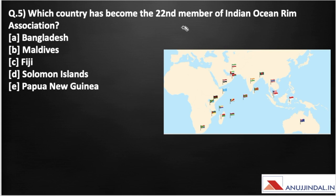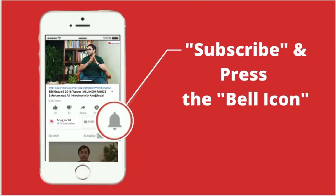The headquarters of Indian Ocean Rim Association is in Ebene City, Mauritius. My question for you is: who is the present Secretary General of IORA? Do mention your answers in the comment section. If you have any queries regarding current affairs, you can put them in the Telegram group.